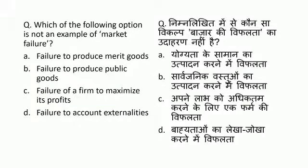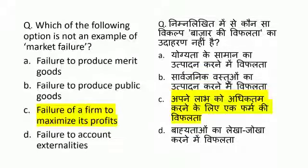Which one of the following is not an example of market failure? Options are: failure to produce merit goods, failure to produce public goods, failure of the firm to maximize its profit, and failure to account externalities. Failure of a firm to maximize its profit is not an example of market failure.